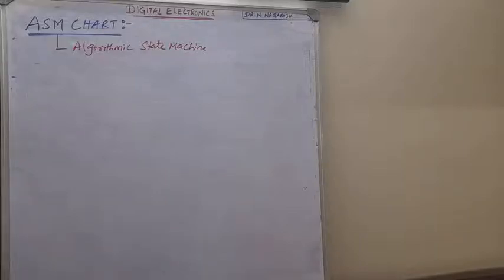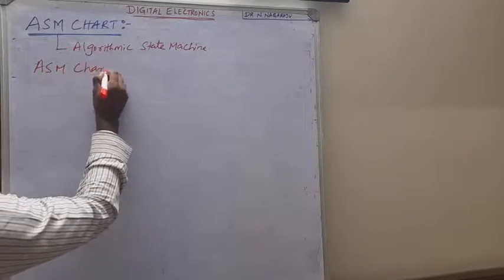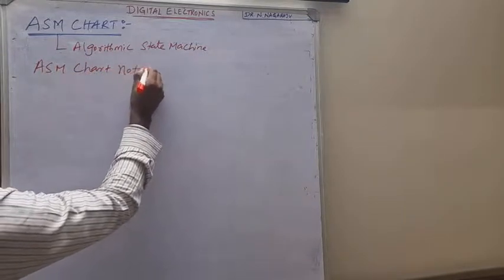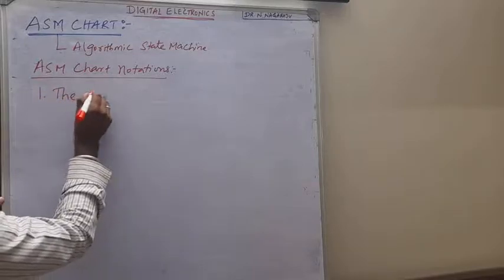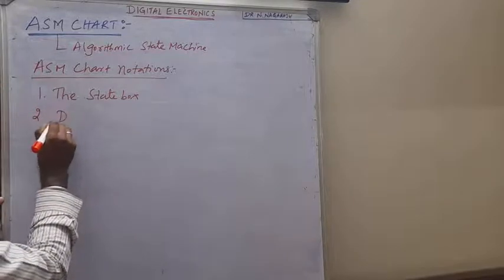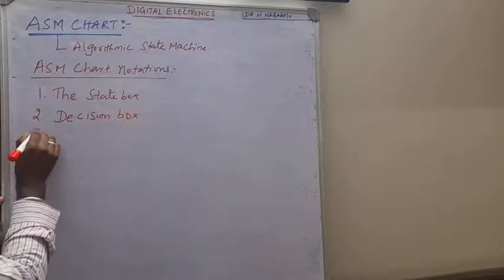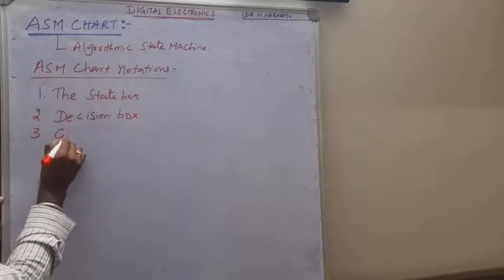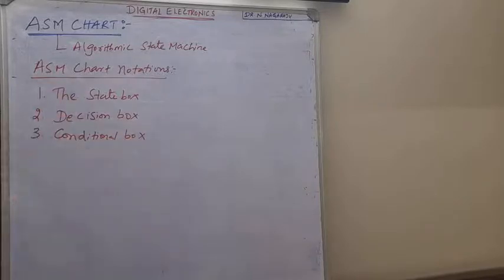So the ASM chart notations are: there are three types of notations. The first is the state box, the second notation is the decision box, and the third notation is the conditional box. This ASM chart can be designed for any type of sequential machine.